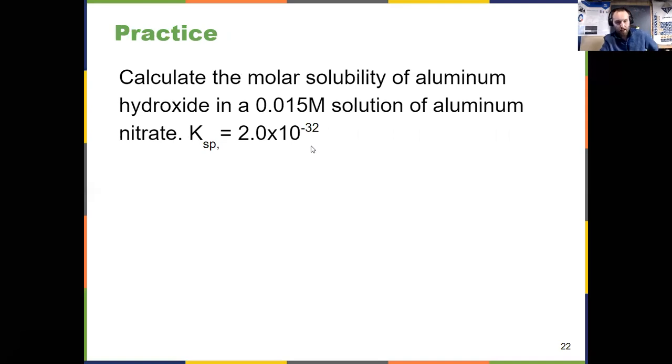And this is what a common ion problem would look like. Calculate the molar solubility of aluminum hydroxide in a 0.015 molar solution of aluminum nitrate. And aluminum nitrate is fully soluble because nitrates, anything bonded to nitrate is always fully soluble. So now I've got to write out the KSP expression for aluminum hydroxide, Al(OH)3. But when I plug in my initial concentrations of those ions, it's not going to be zero for aluminum. It's 0.015. So that's going to reduce my overall concentration that can dissolve. My solubility will be lower due to the common ion effect. And the answer to this one, 1 times 10 to the negative 10.